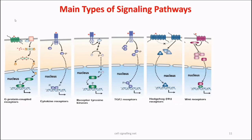Then comes the Wnt signaling pathway. The Hedgehog and Wnt signaling pathways are mechanistically similar, but the major difference is that in Hedgehog signaling, two different classes of receptors are used, while in Wnt signaling only a single receptor class is used. In the presence of the ligand, the Wnt signaling pathway is switched on, initiating specific cellular physiological responses; in the absence of the ligand, it is switched off.